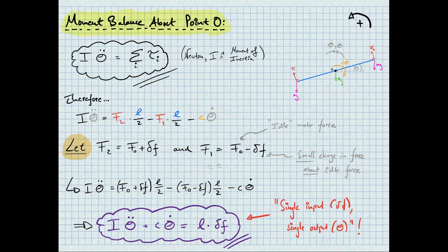Note the plus and minus sign difference. This is because F2, shown over here, tends to increase theta, whereas F1 tends to decrease theta. Substituting these new force expressions into the original equation over here yields the final single input, single output differential equation down here. This is great because we've substantially simplified the system into a single input, single output one, but also it is linear, which makes our lives a lot easier for controller design later on.